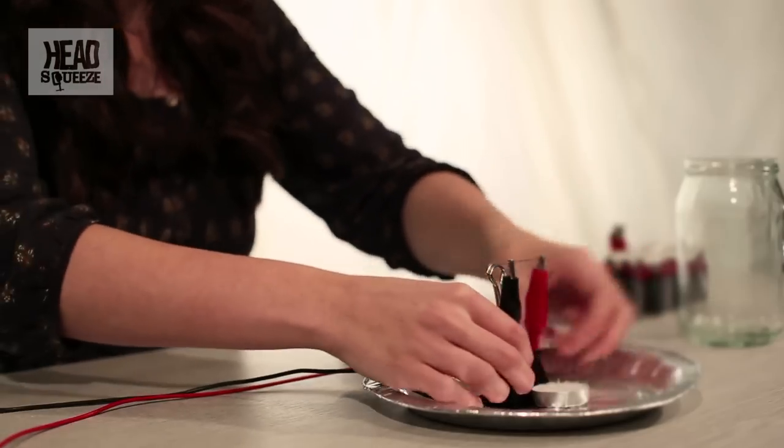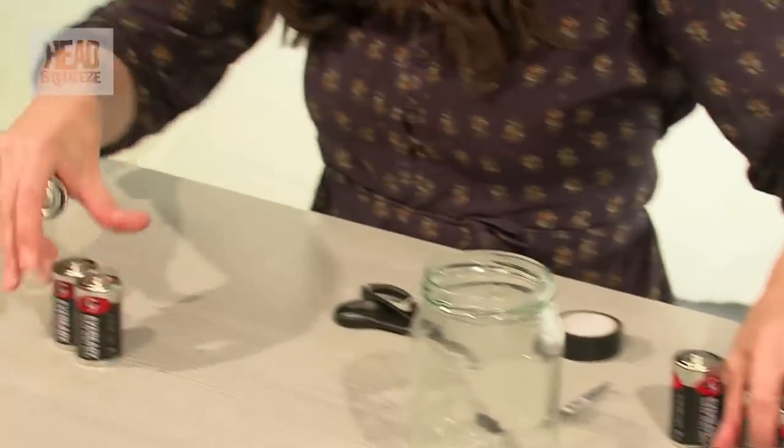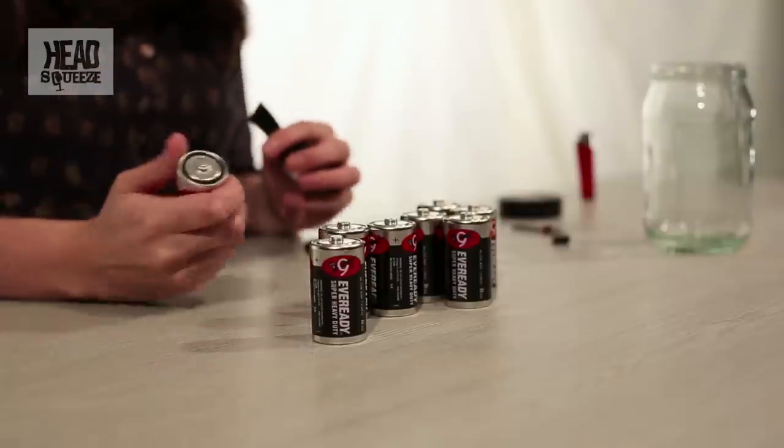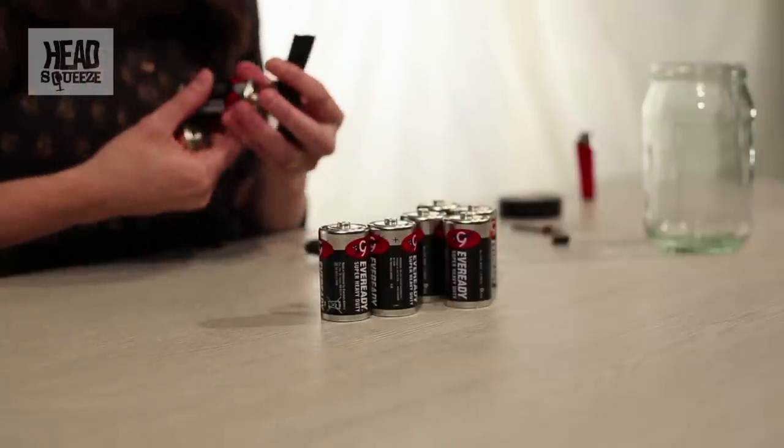That is our light bulb and it's about ready to go. But we just need to get some electricity to run through it. And that's what the batteries are for. So we've got our batteries, all eight of them. And what I'm just going to do is tape all of these batteries together to make a bigger battery.